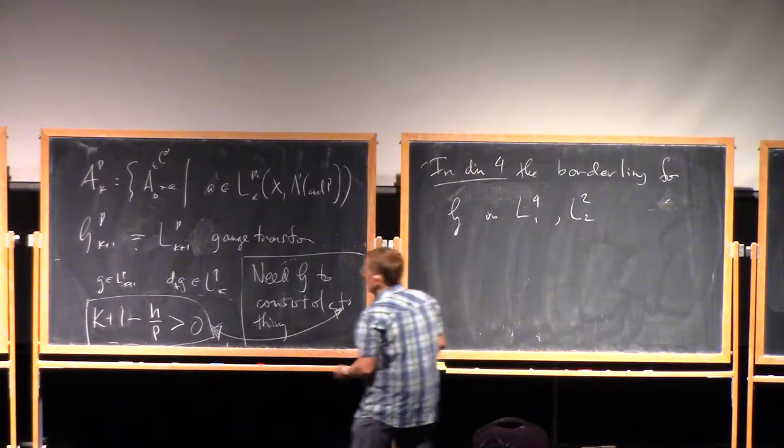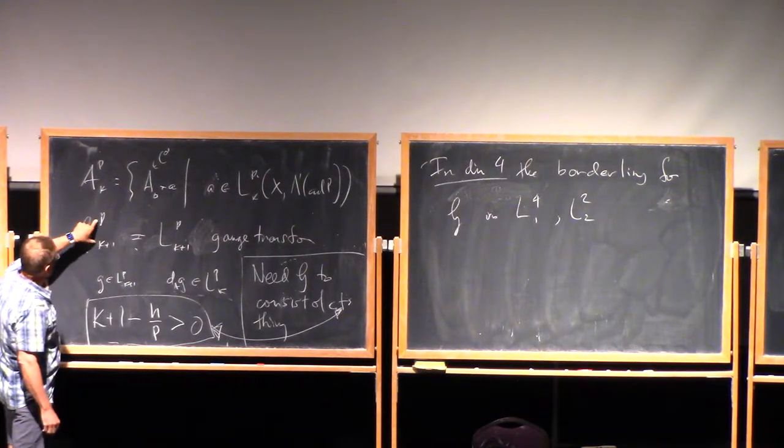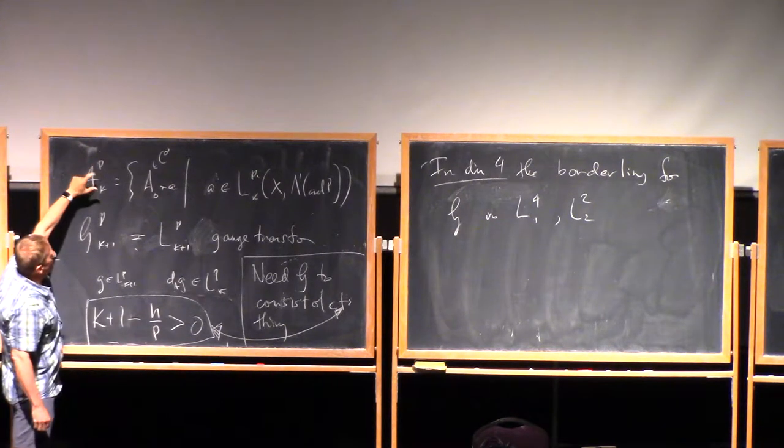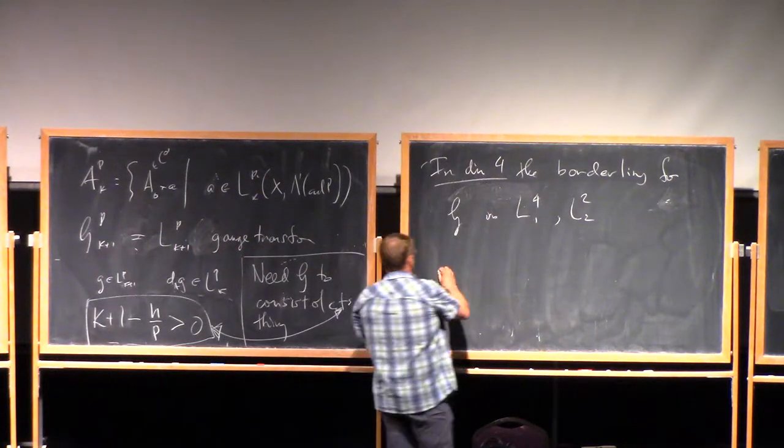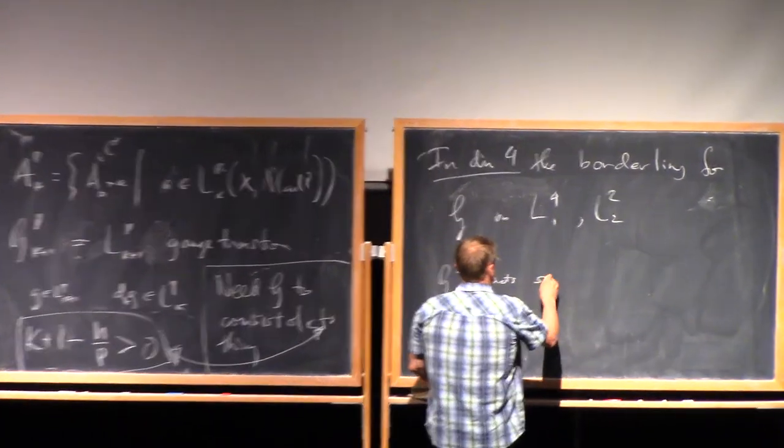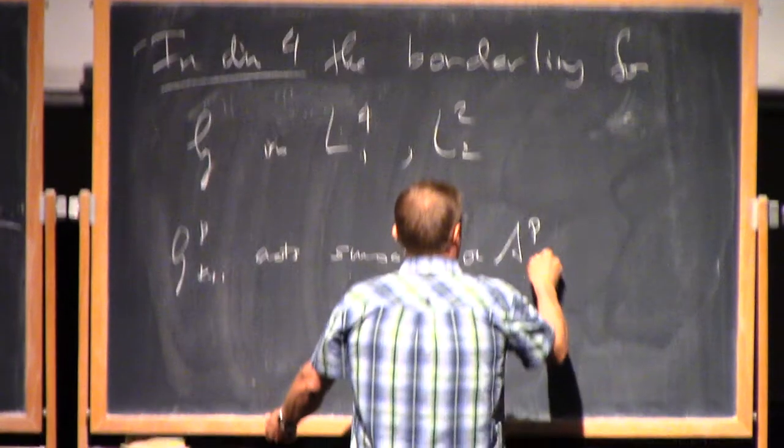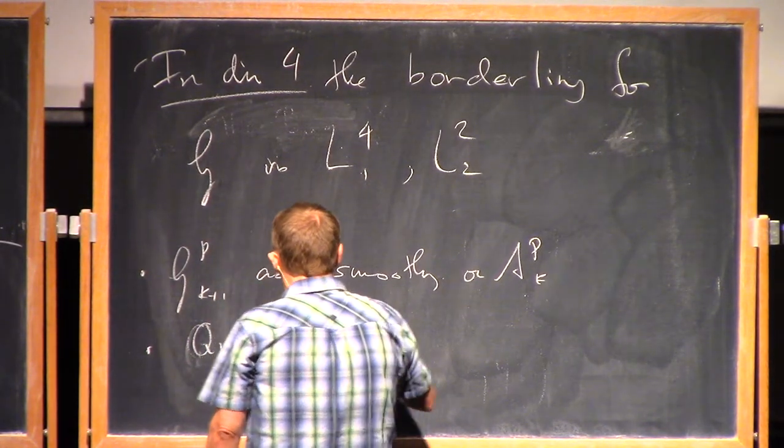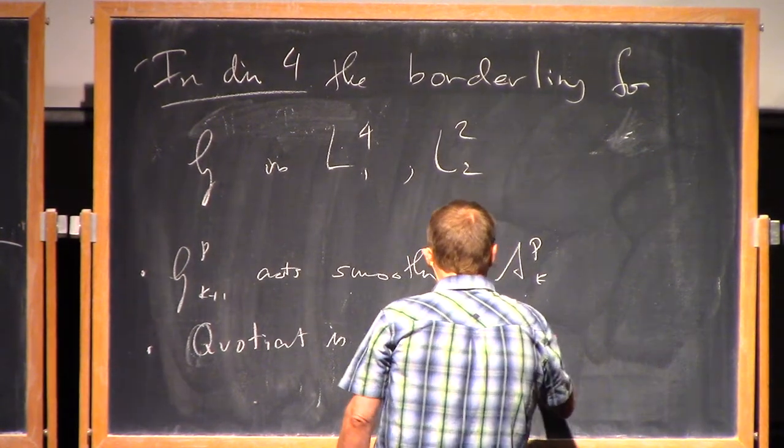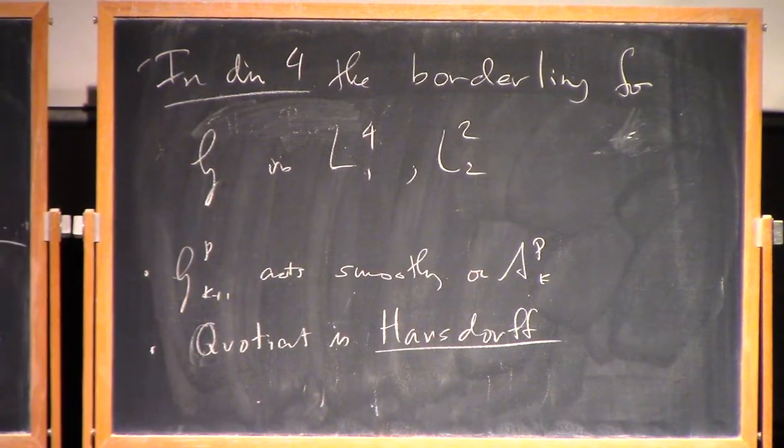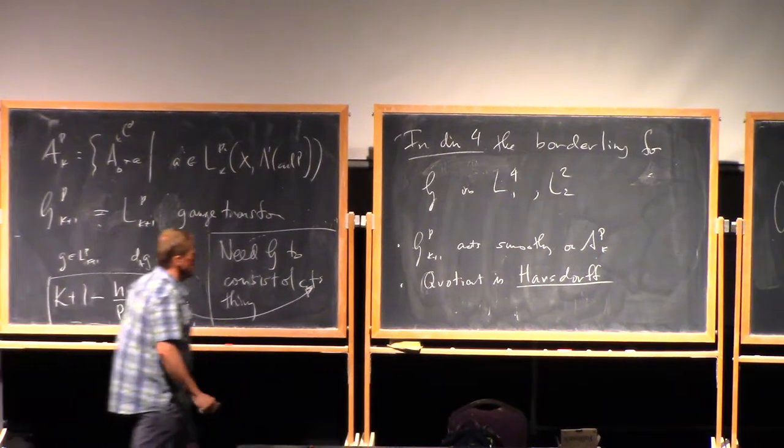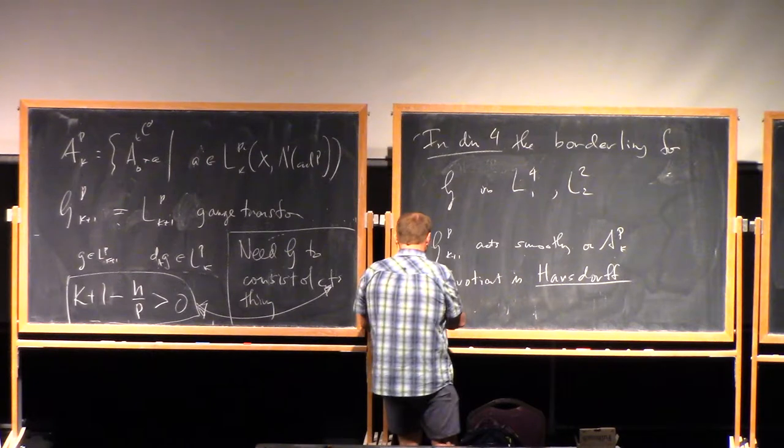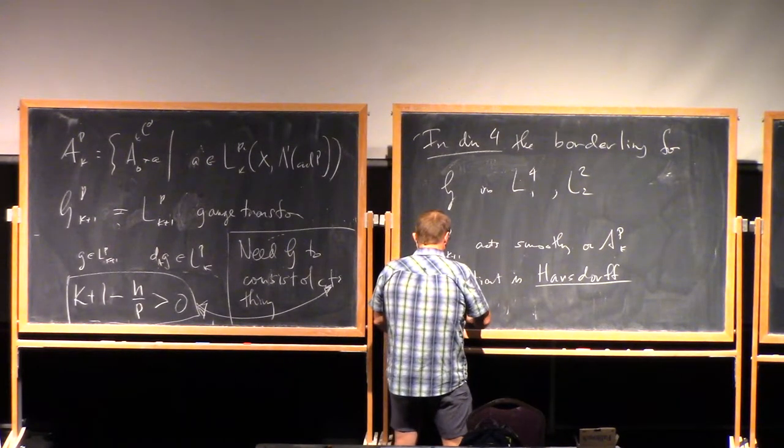Now, so you can check easily in this setting that you can give this the structure of a Banach-Lie group or Hilbert if p is 2. And this is just an affine Banach-Hilbert space. And the action is smooth, smoothly on APK. The quotient is Hausdorff. You should think that's a tiny bit surprising because this is not even, the G's not locally compact, so it's a rather horrible thing. Nonetheless, the quotient space, as long as you have continuity, is a Hausdorff space.